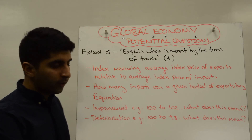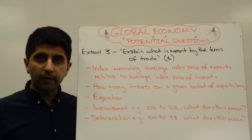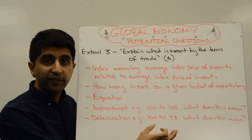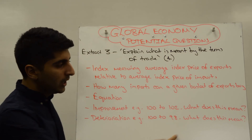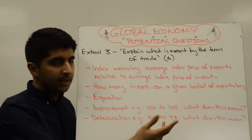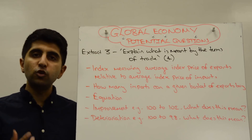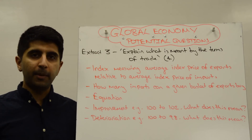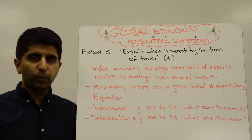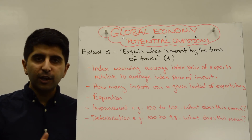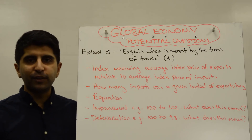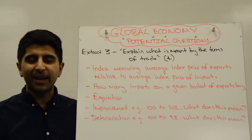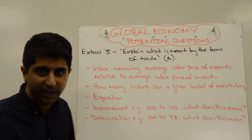You might also want to explain the deterioration — maybe what caused it. More importantly, show a figure: from 100 to 98 means that a given basket of exports can buy 2% less imports than in the base year. You've made your four distinct points very clearly. Get ready for the next question in the exam. Thanks very much for watching, guys. See you in the next video.